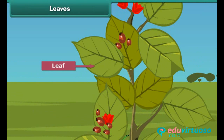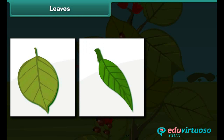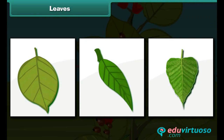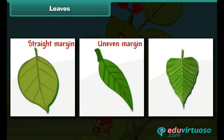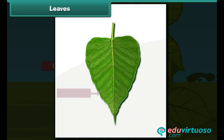The next part of the plant is the leaf — a green part born on the stem. Leaves are of different shapes: some are round, some are long, and some are triangular. The surface border of a leaf is known as the margin, and margins also differ. Some have straight margins while some have uneven margins. The flat part of a leaf is called the leaf blade, which has a main vein and many smaller veins through which water is circulated.